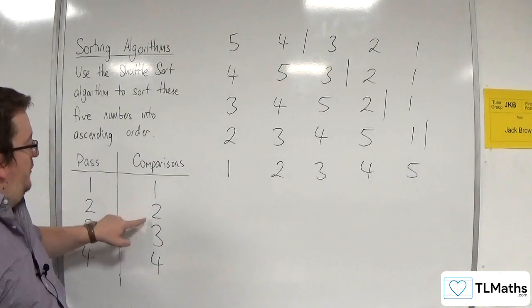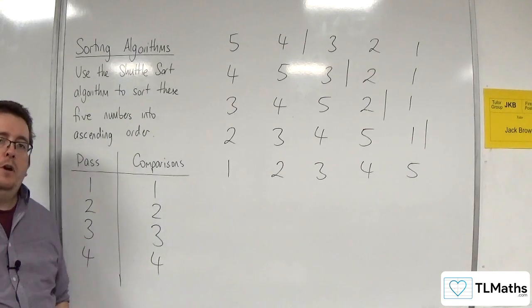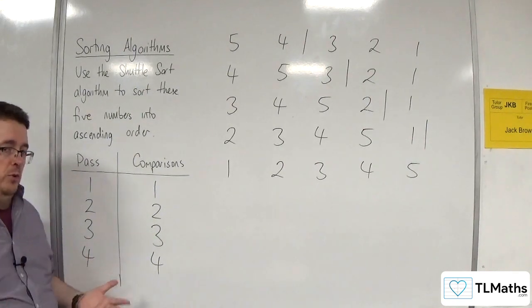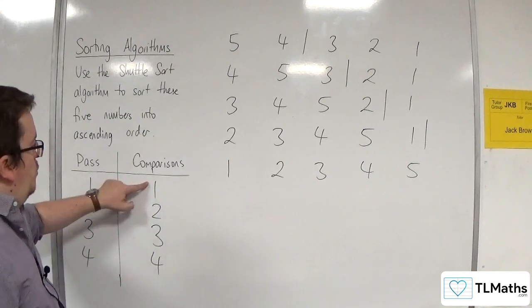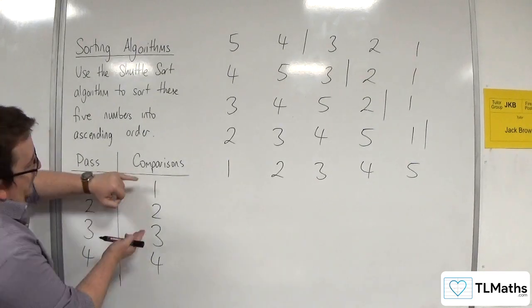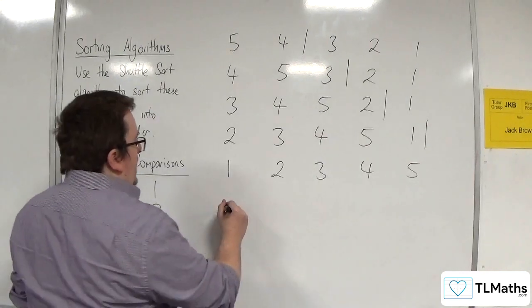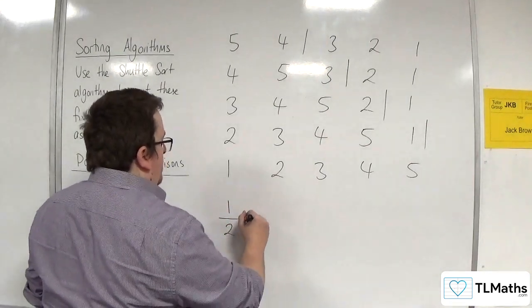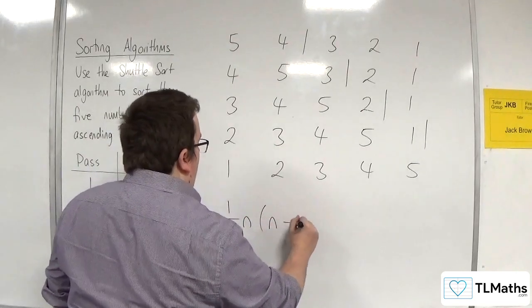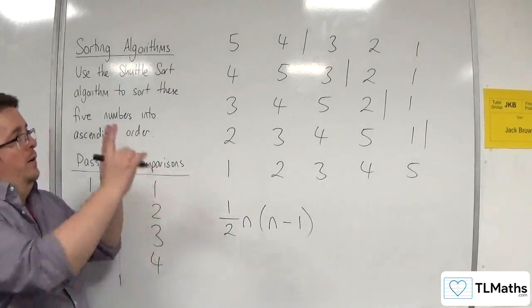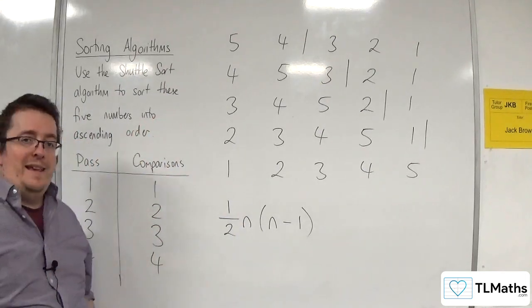So, 1, plus 2, plus 3, plus 4. You can see that the triangular numbers are coming through again for the total number of comparisons. So, 1, 3, 6, 10. And that has a formula for the total number of comparisons of 1 half n times n minus 1, where n is the number of numbers in your list.